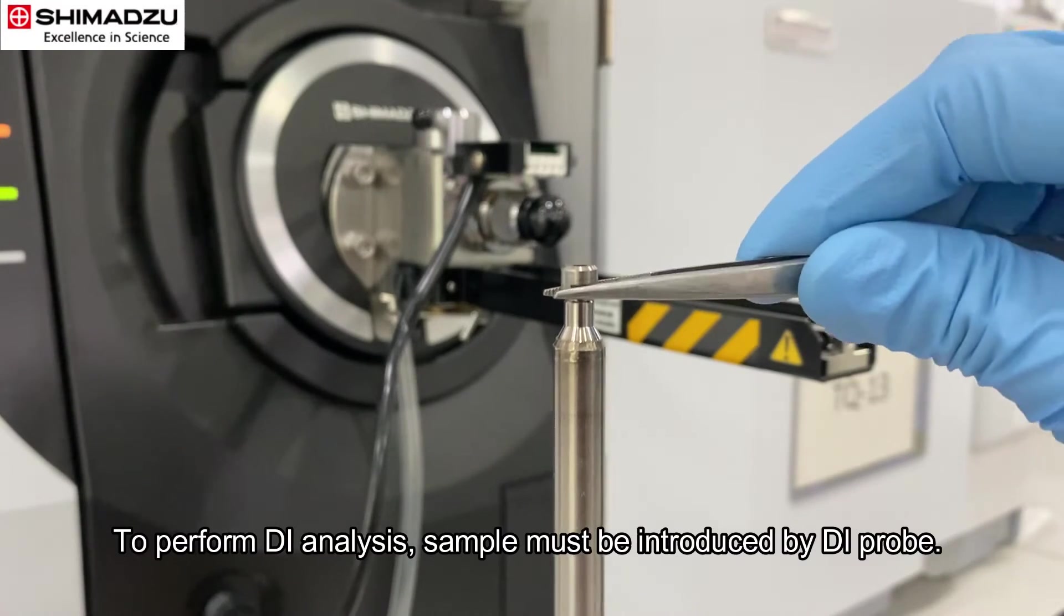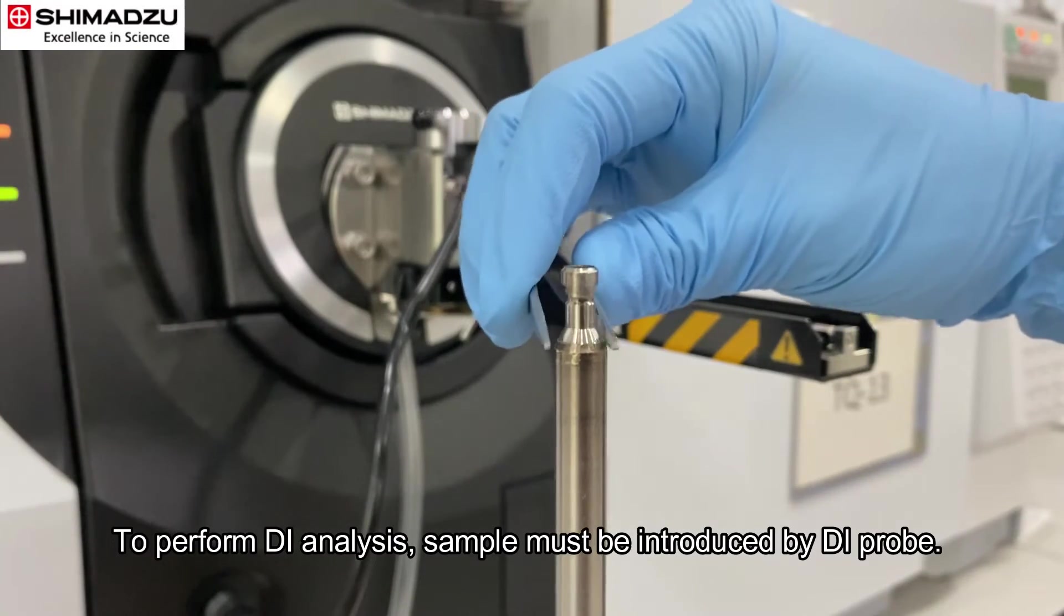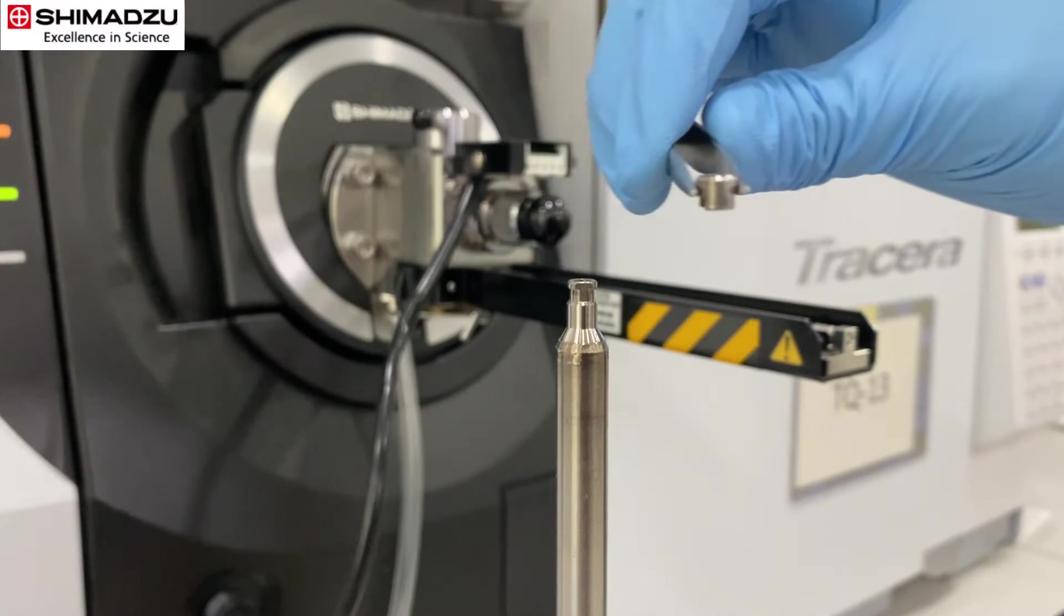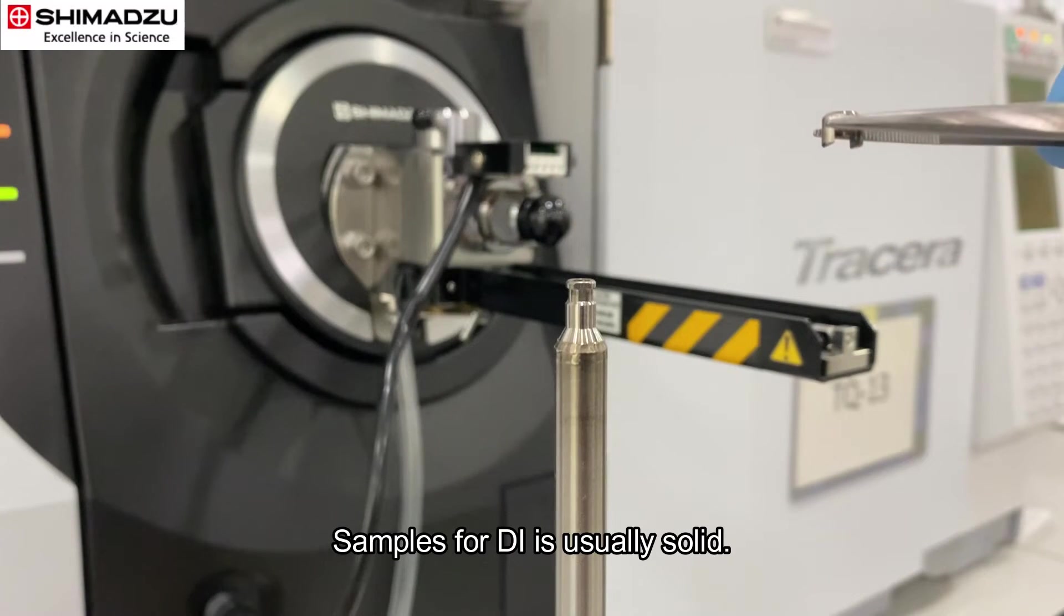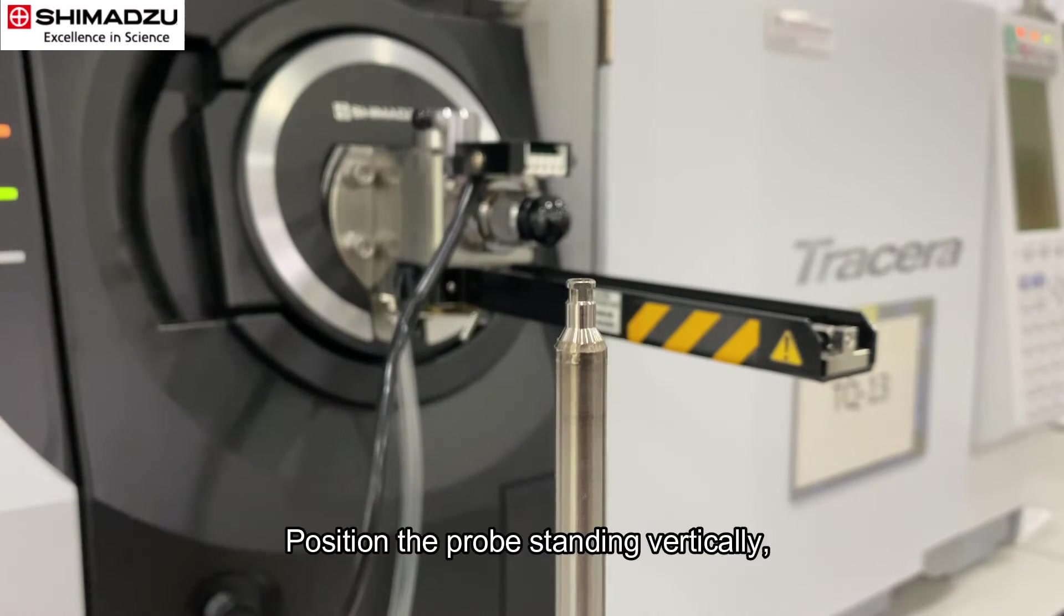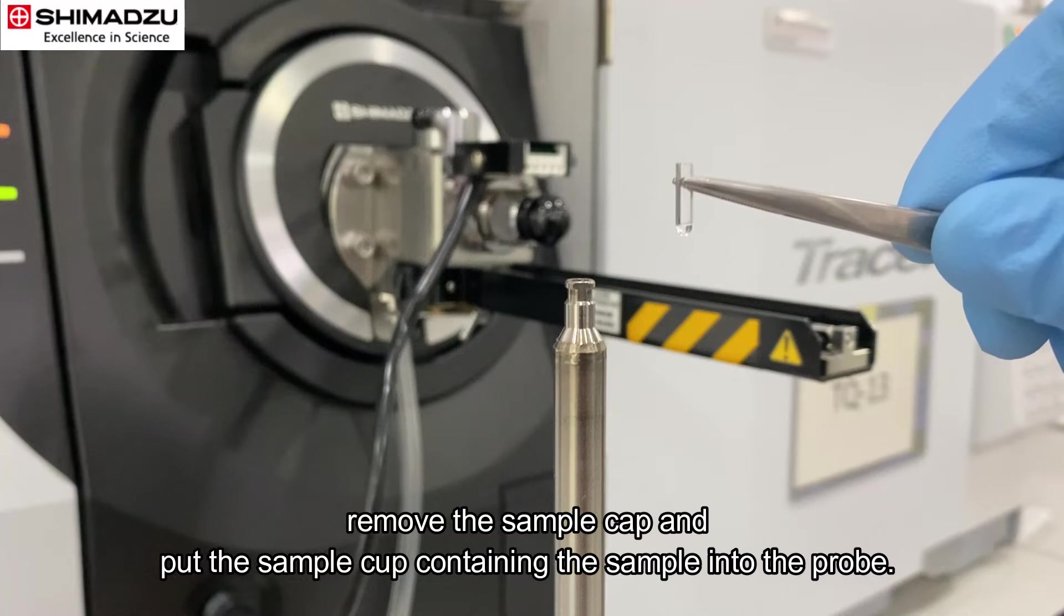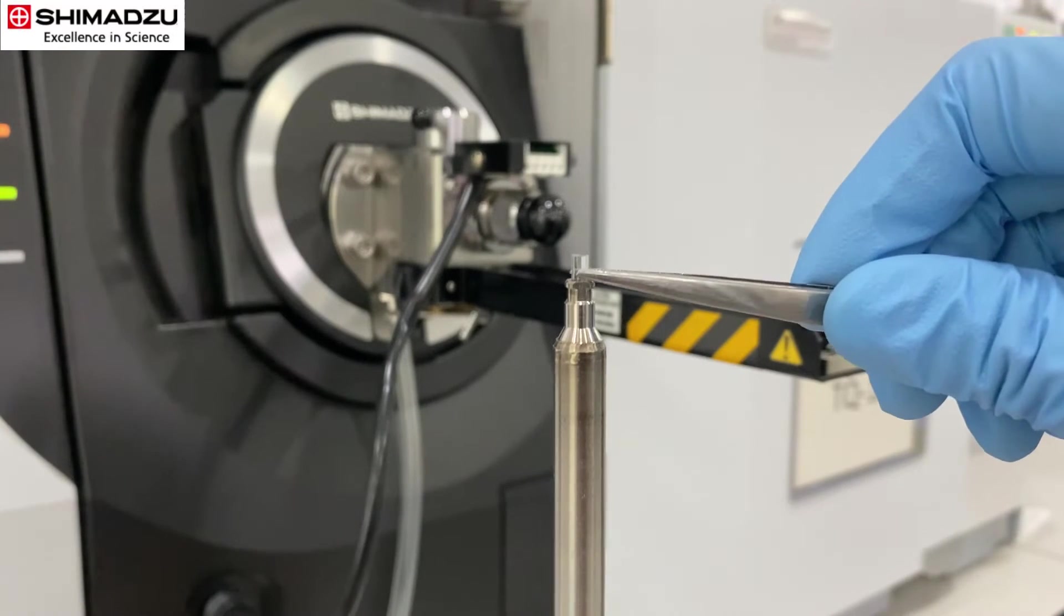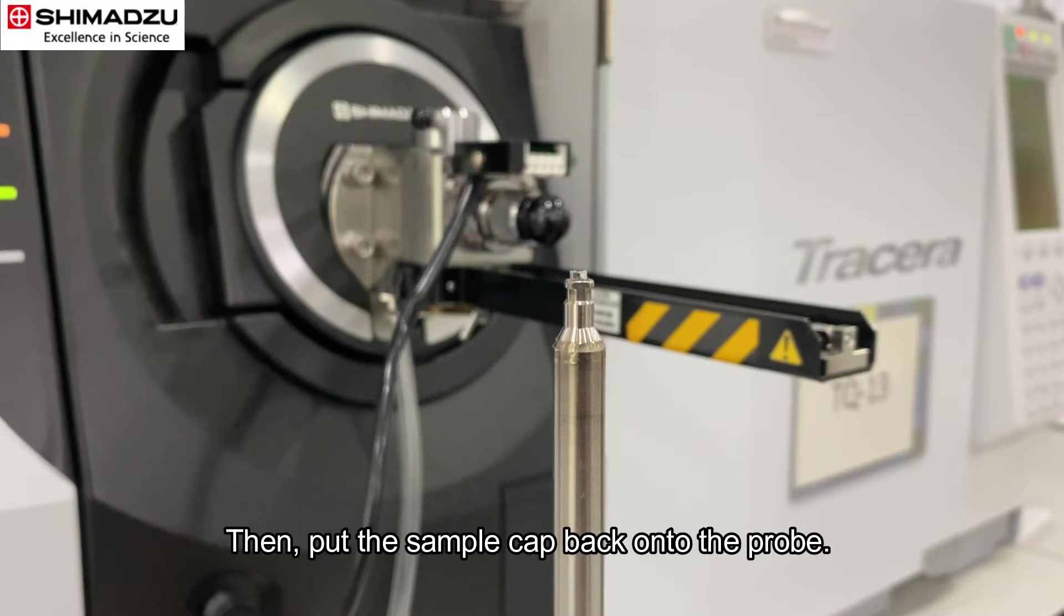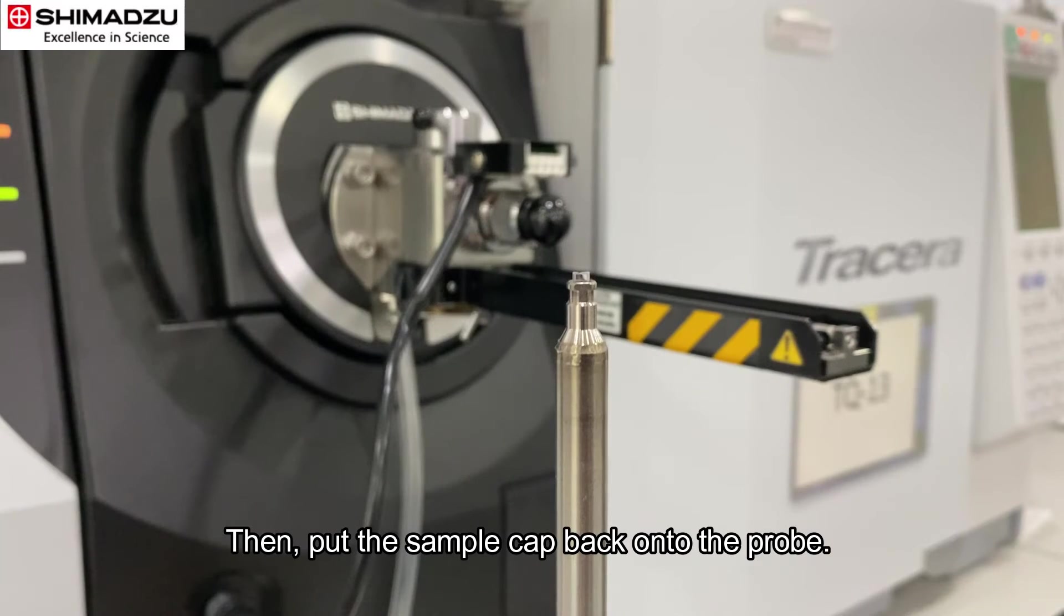To perform DI analysis, sample must be introduced by DI probe. Samples for DI are usually solid. Position the probe standing vertically, remove the sample cap, and put the sample cup containing the sample into the probe. Then, put the sample cap back onto the probe.